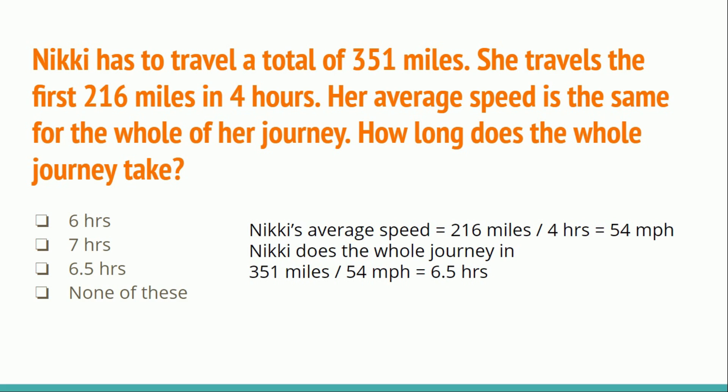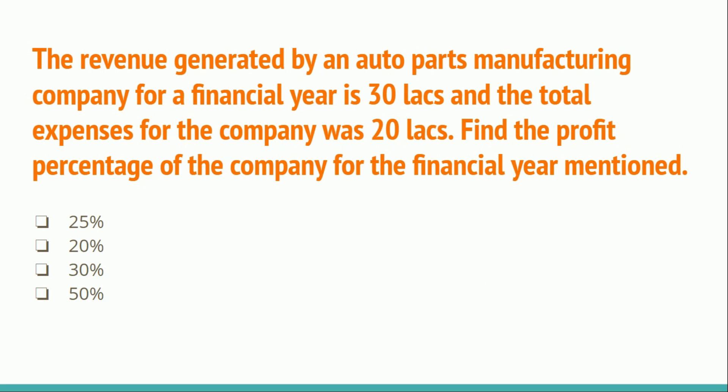The next question: the revenue generated by an auto parts manufacturing company for a financial year is 30 lakhs, and the total expenses for the company were 20 lakhs. Find the profit percentage of the company for that financial year. The options are 25%, 20%, 30%, or 50%.